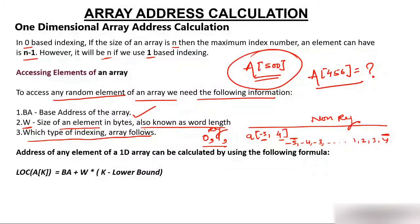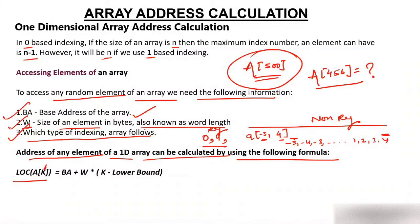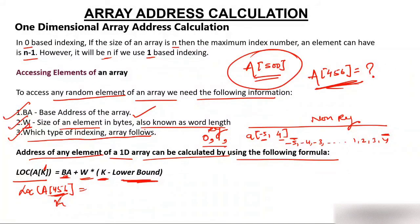To calculate the address of any element you need: the base address, the size W (word length), and the indexing type being used. The formula to calculate the address of any element in a 1D array is: Location of A[k] = Base Address + W * (k - Lower Bound). Here k is the index of the element whose address you want to find.